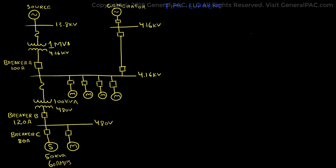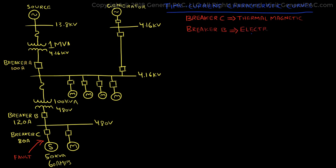To demonstrate how TCC curves can be helpful in achieving coordination, let's consider a fault at the load terminals of breaker C. This time, however, we will assume breaker C to be thermal magnetic and breaker B to be a breaker with an electronic trip unit, with adjustable settings.